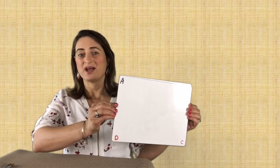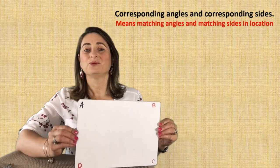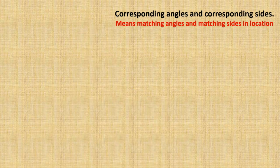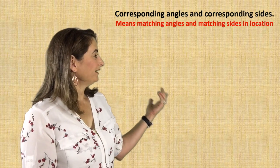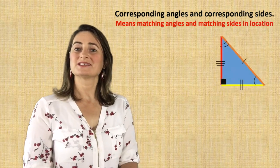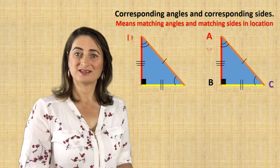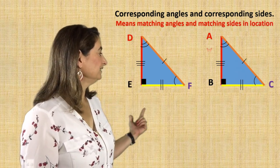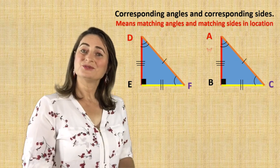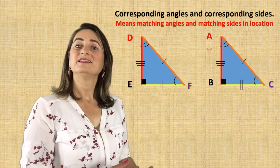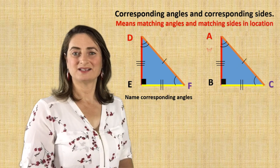So let's practice identifying whether the two figures are congruent or not. Remember, corresponding angles and corresponding sides means matching angles and matching sides in location in both figures. Look at triangle ABC and the other triangle DEF. For us to determine if those two figures are congruent, we need to identify the corresponding angles and the corresponding sides first.